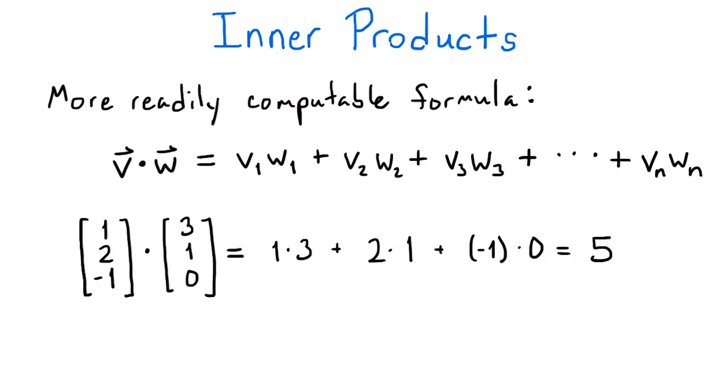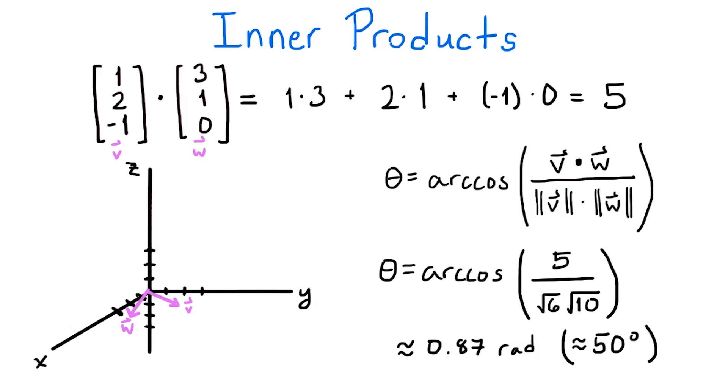So, for example, the dot product of the vectors 1, 2, minus 1, and 3, 1, 0 is 1 times 3, plus 2 times 1, plus negative 1 times 0, which equals 5. This means that the angle between these two vectors is the dot product of v and w, which is 5, divided by the magnitude of v, which is the square root of 6, and the magnitude of w, which is the square root of 10. This gives about 0.87 radians, which is about 50 degrees.